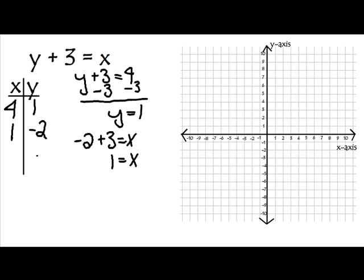How about we try a 0? Let's say y is 0. So I'm going to put 0 in for y. So I'm going to have 0 plus 3 equals x. 0 plus 3 is 3 equals x. So my next ordered pair is 3, 0.